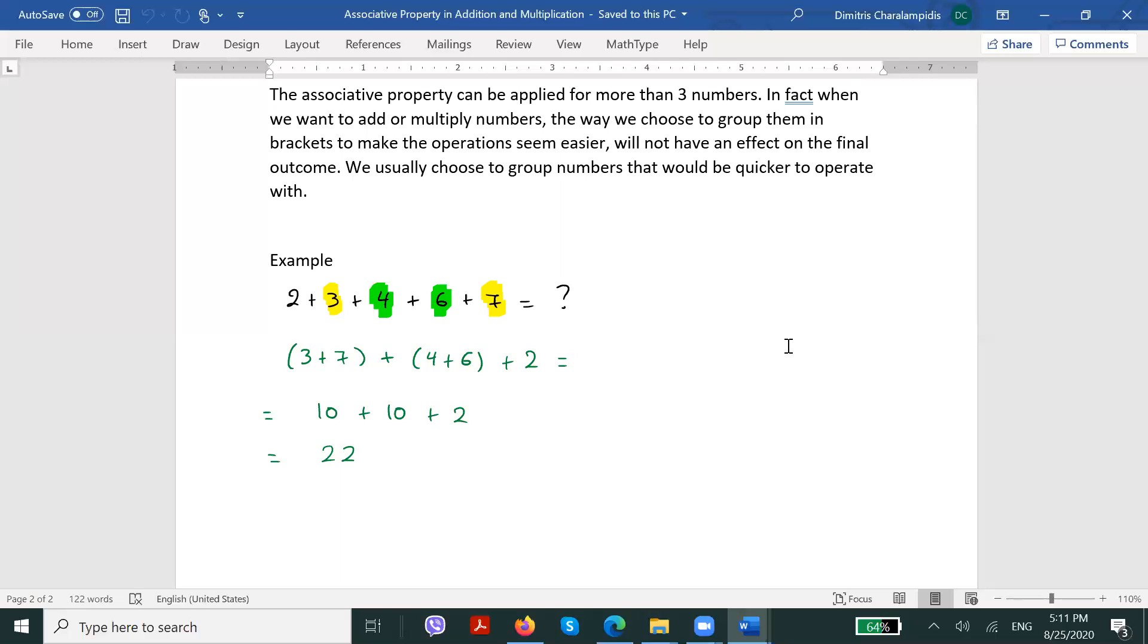For instance, if I need to find the sum of 2+3+4+6+7, then at least for me, it would be easier to group numbers 3 and 7 together, then to group numbers 4 and 6 together, and then I should add 2.